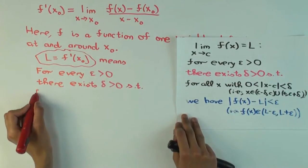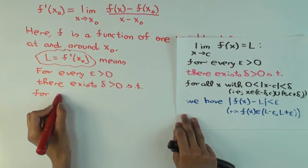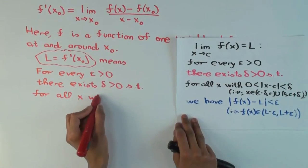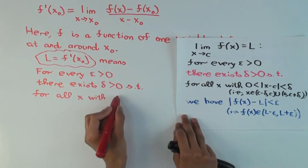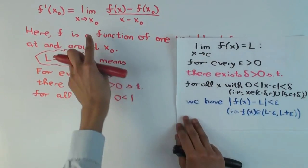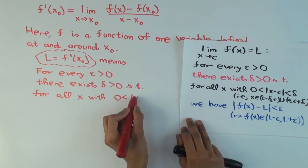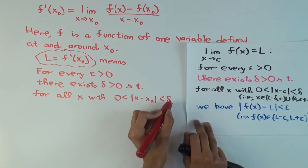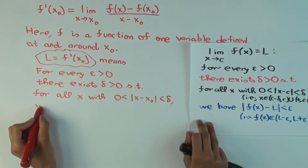okay, for all x within, the absolute value of x minus x naught is greater than 0 and less than delta. Okay, so instead of c, I'm putting x naught, because that's the point at which you're taking the limit. Okay? What do we have?